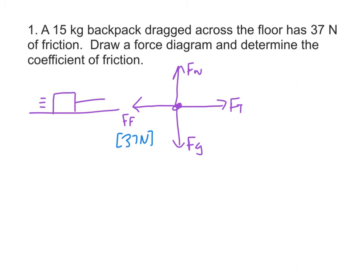The problem tells us that the friction is 37 newtons and that the mass is 15 kilograms. So let's just list a given find for this. We know that frictional force is 37 newtons, and we know that mass is 15 kilograms. And we want to find mu.